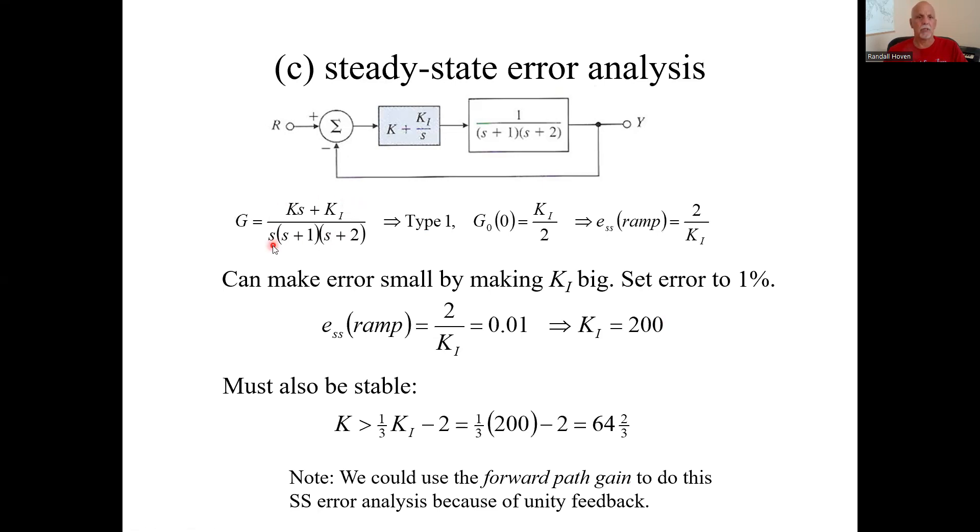And it is this. You see that S there, we've done this type of stuff before. That's a type one system. This G sub naught, get rid of this S, evaluate the rest at S equals zero. We get K_I over two. The error to a ramp is one over that. This is all under steady state error analysis, a previous video. There's our steady state error to a ramp. It's got to be one percent. We solve for K_I, we say it must be 200. And if it's also got to be stable, then K's got to be greater than 64 and two thirds.